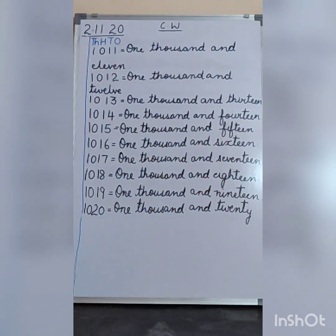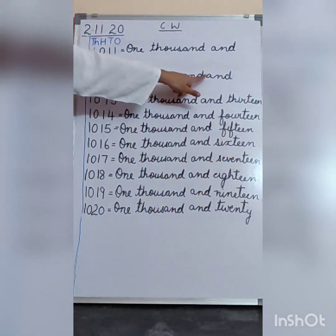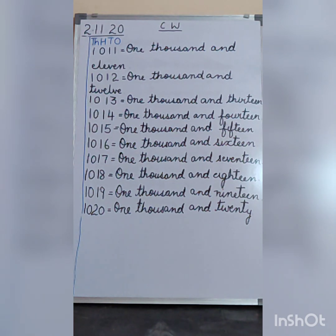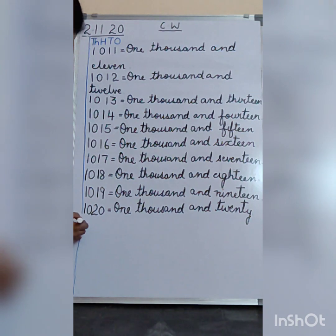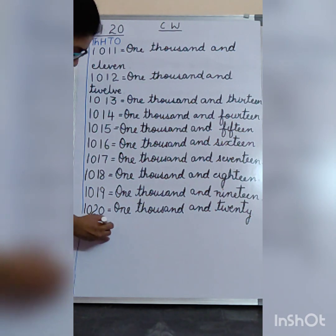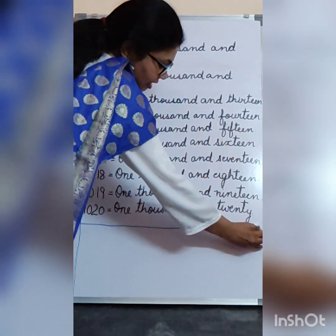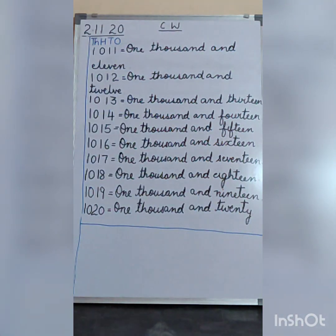And one thousand and twenty. Please leave a box in between, leave one finger space and write, leave a line and write. Write neatly how ma'am has done the work. Sharpen your pencils and draw your finishing line after finishing your work.